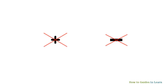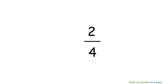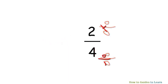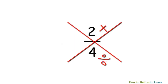In equivalent fractions, you have to do the same operation — division or multiplication — on both the numerator and denominator. You can't do multiplication on the numerator and division on the denominator.